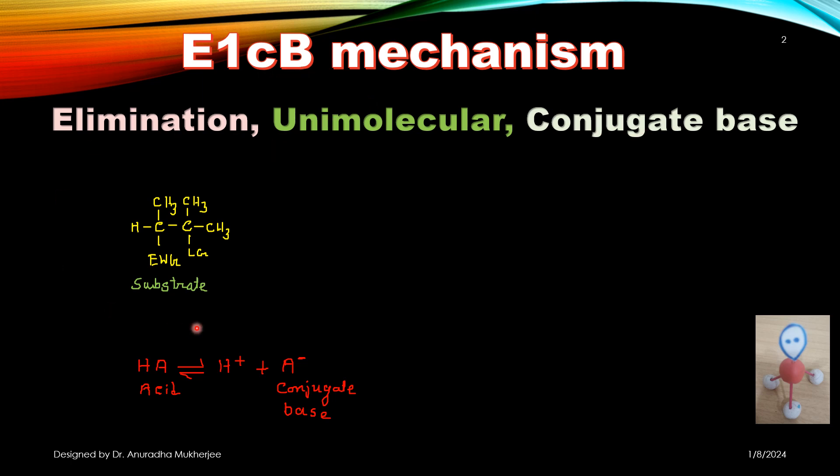In the E1CB mechanism we have to take a substrate which contains an electron withdrawing group and hydrogen, and the next carbon contains a leaving group. The electron withdrawing group withdraws electron density making the hydrogen acidic in nature.